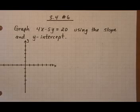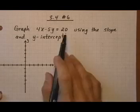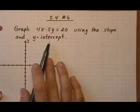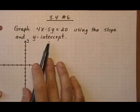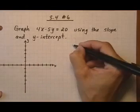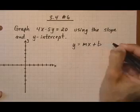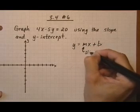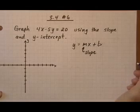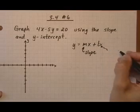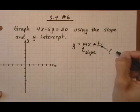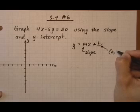3.4 number 6: Graph 4x minus 5y equals 20 using the slope and the y-intercept. Well, if we want to use the slope and y-intercept for that equation, we need to get it into y equals mx plus b format because then we know the slope is the coefficient of x and we also know that b is the y-value of the y-intercept.